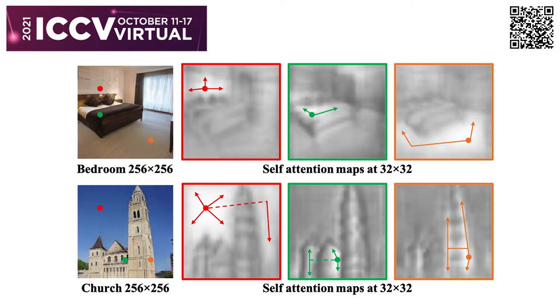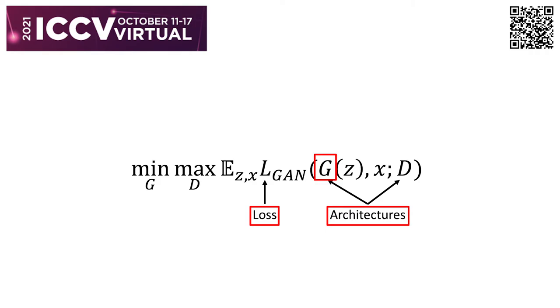We visualize the attention maps given query positions in the generated images. We can see the weights of the attention maps strongly align to the semantic layout in a long range of crossed objects.